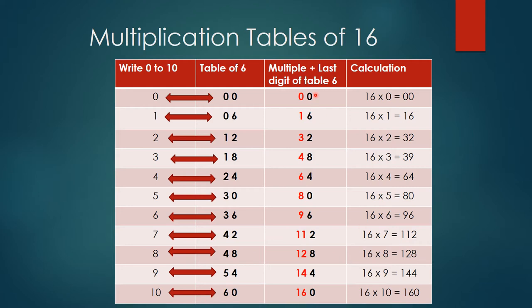This is nothing but table of 16. So 16 times 0 is 0, 16 times 1 is 16, 16 times 2 is 32, 16 times 3 is 48, 16 times 4 is 64, 16 times 5 is 80, 16 times 6 is 96, 16 times 7 is 112, 16 times 8 is 128, 16 times 9 is 144, and 16 times 10 is 160.